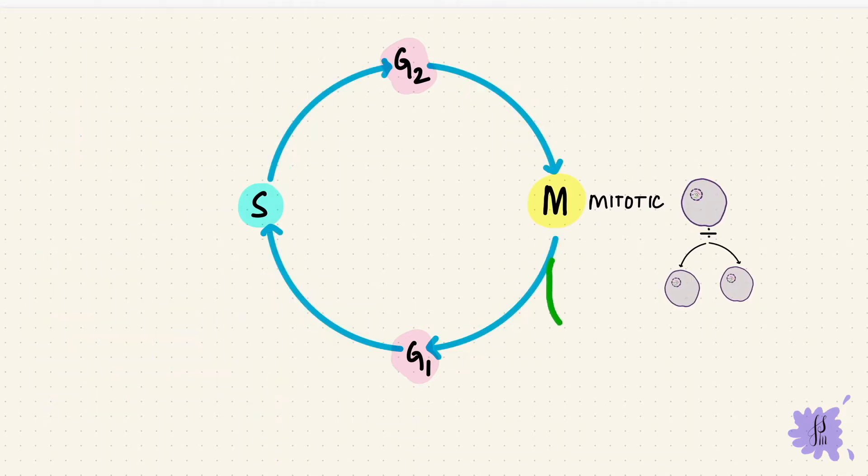After division, the cell can enter a G0 phase. This is the resting phase. So this is the phase where it exits the dividing cycle. A cell from this stage can re-enter the cycle again through the G1 phase and then go through the cycle and divide again.